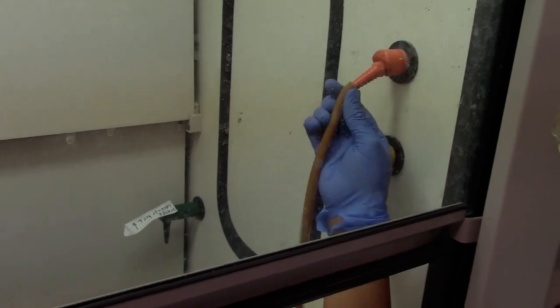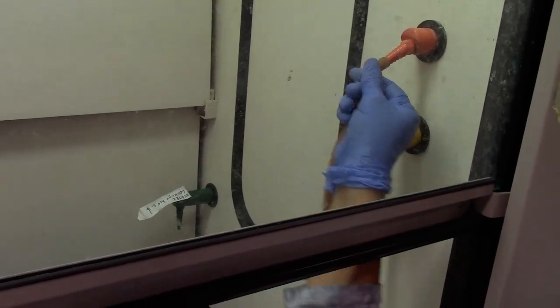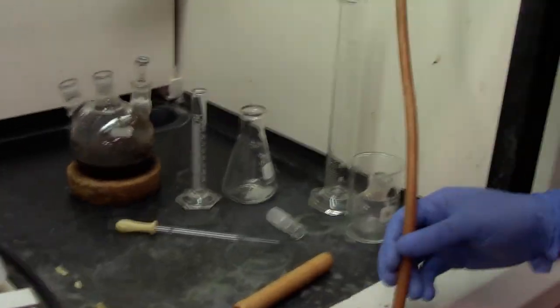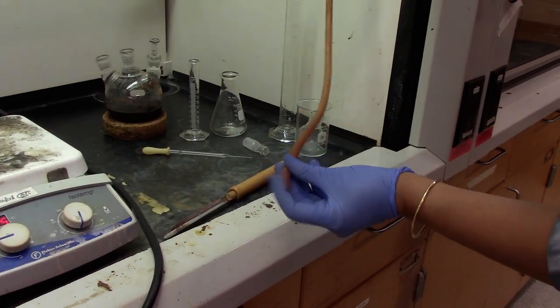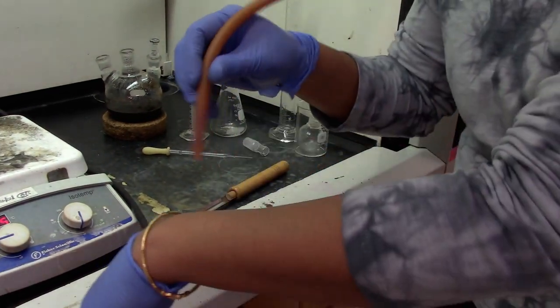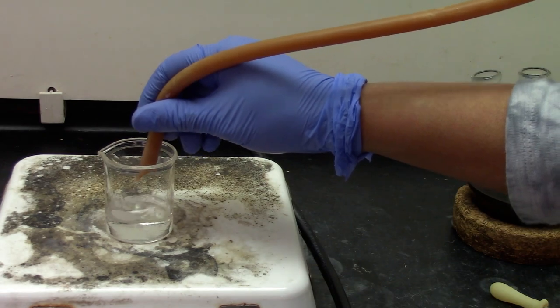Connect the Tigon tubing to the air connector, which is the orange one. Make sure the airflow is gentle. And gently blow air on top of the beaker.